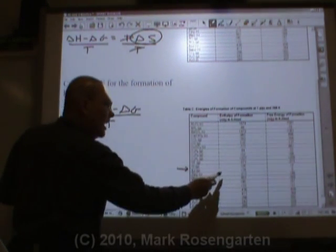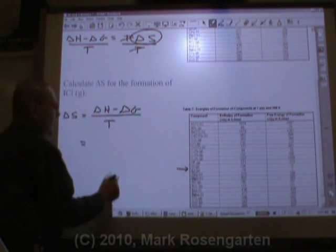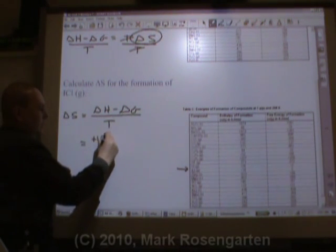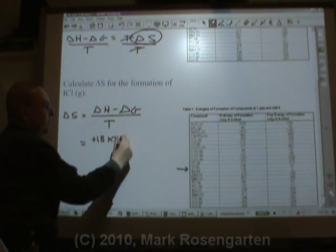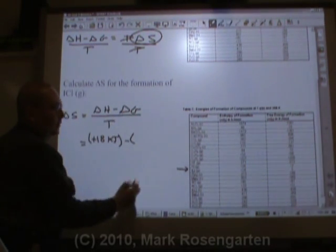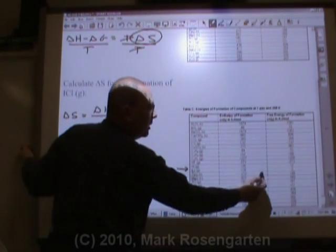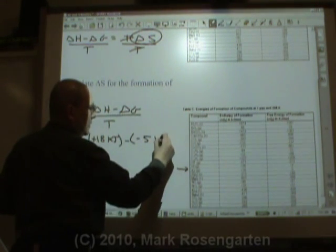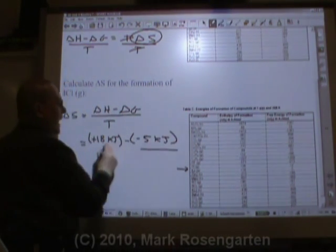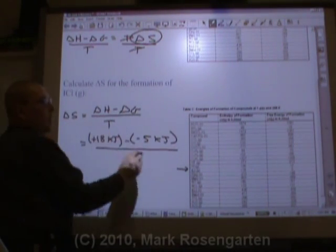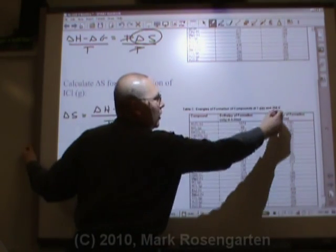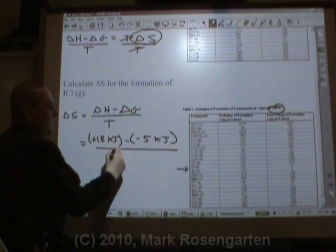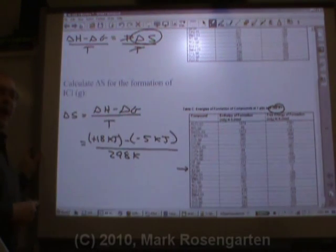So let's plug those numbers in for iodine chloride. Iodine chloride has a delta H of positive 18, and I'm going to subtract the delta G of iodine chloride, which is negative 5, and divide it by the temperature that this delta G is listed for, 298 Kelvin.